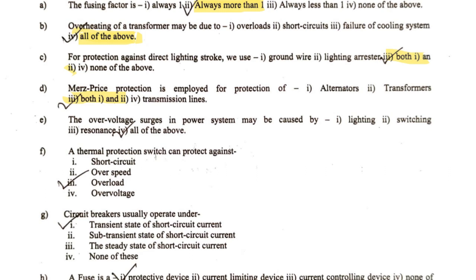The next question: over-voltage surges in a power system may be caused by which of the following? Option one: lightning; option two: switching; option three: resonance; option four: all of the above. Note that option one is written as 'lighting' in the paper but that is a misspelling — it should be 'lightning.' Since lightning, switching, and resonance are all valid causes, all of the above is our correct answer.